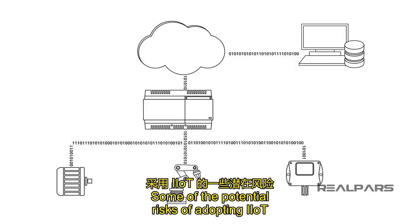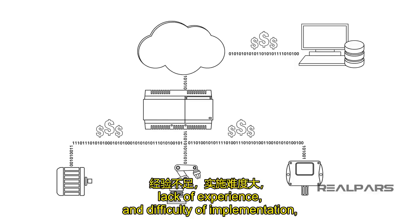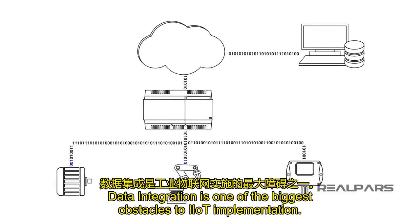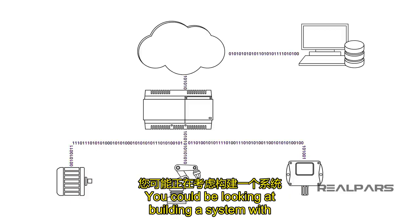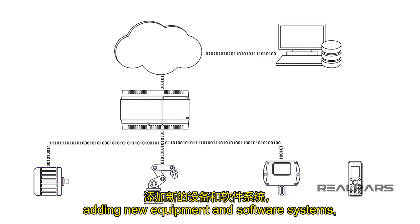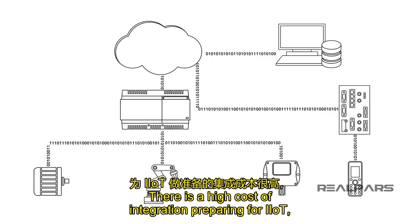Some of the potential risks of adopting IIoT are the expense of data integration, lack of experience, difficulty of implementation, and devastating cyber threats. Data integration is one of the biggest obstacles to IIoT implementation. You could be looking at building a system with thousands of existing connected sensors and devices, adding new equipment and software systems, and interfacing legacy equipment to communicate using standard IIoT protocols.